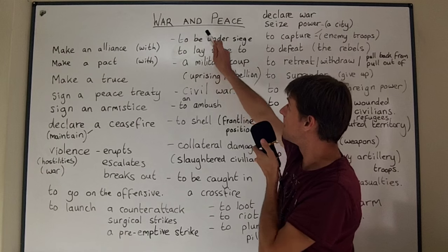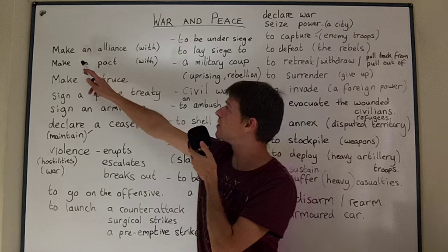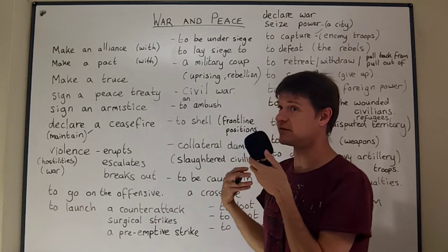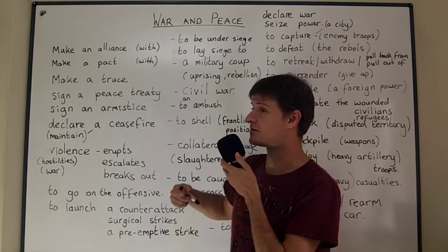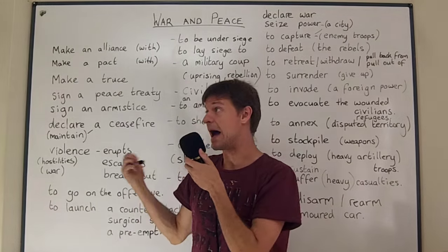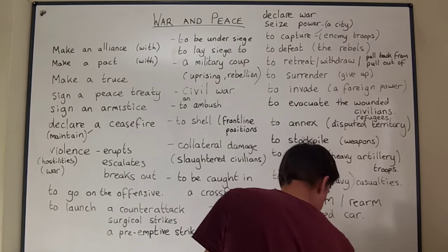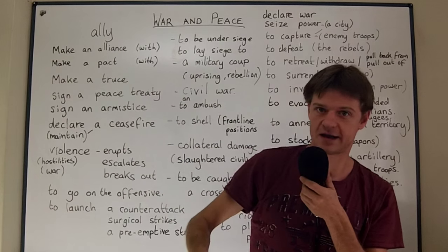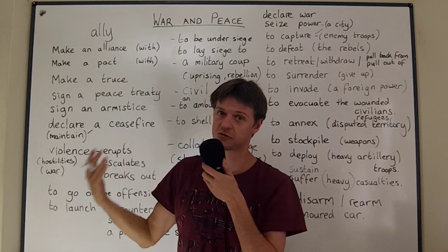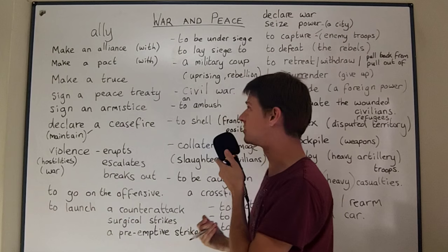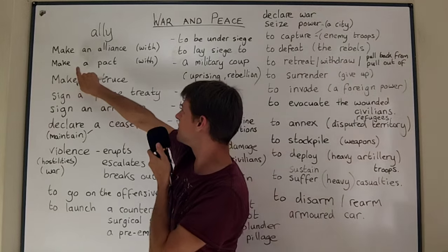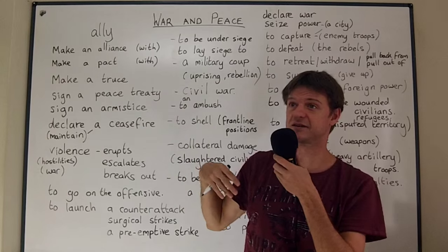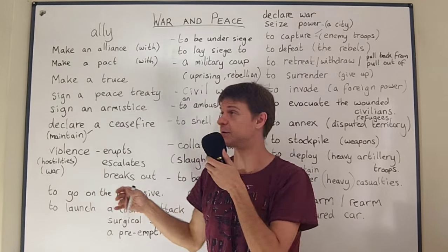Today we're looking at war and peace. Firstly, you can make an alliance with someone. A sovereign state could make an alliance with another sovereign state, and this simply means that they become allies — another word from 'alliance' — and your allies are the people who are on your side. It's a type of treaty, a type of contract where two nations agree to be on the same side. The same goes for making a pact.